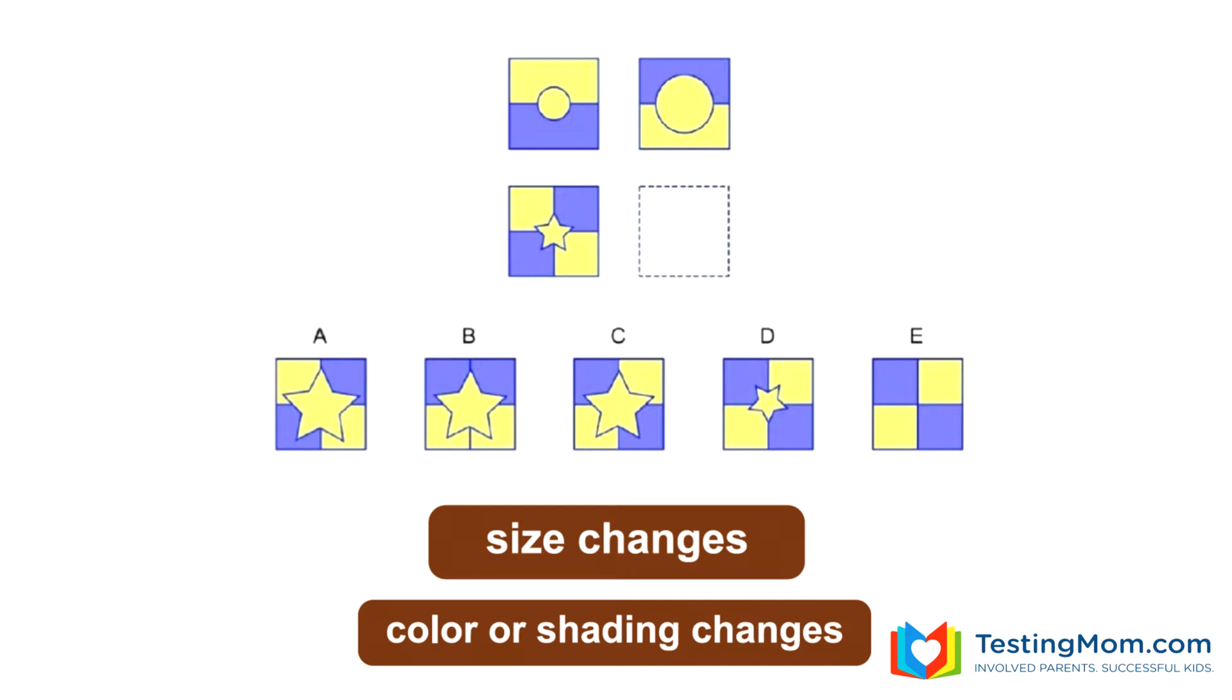In this example, the rule is that the shape in the middle gets bigger and the colors behind the shape switch places. So two things happen, a size and a color change. C is the answer.